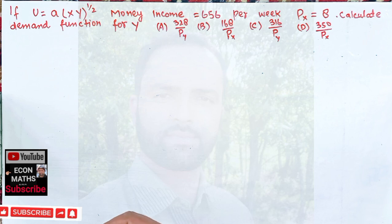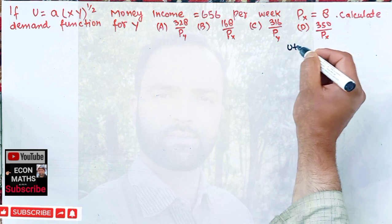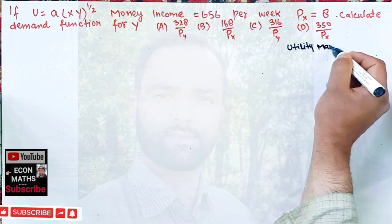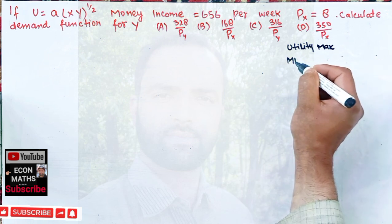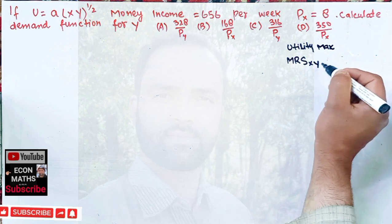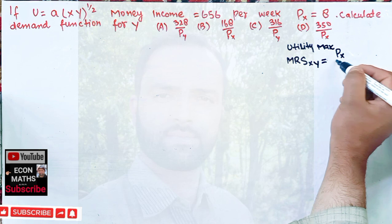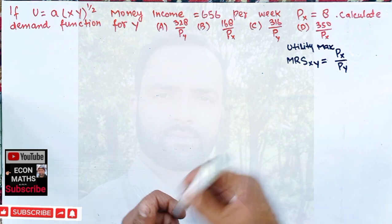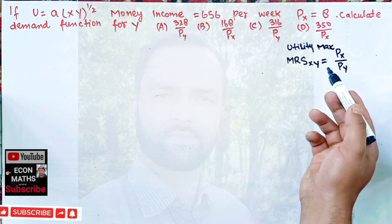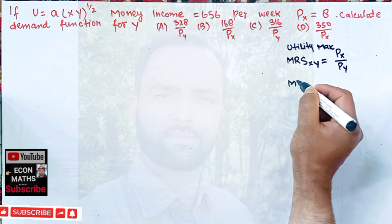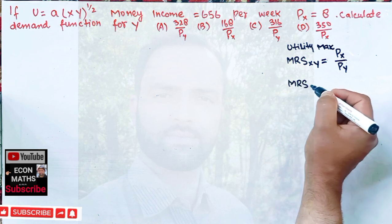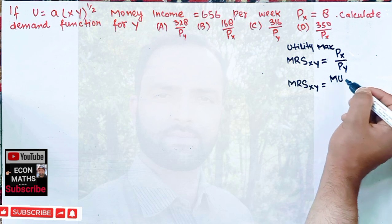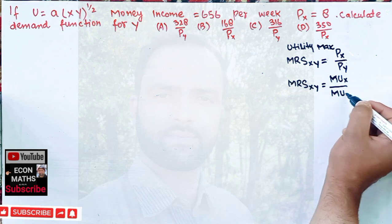To solve this, first we find the utility maximizing condition. The utility maximizing condition is that the marginal rate of substitution between the two goods X and Y should be equal to the ratio of the prices of these two goods. The marginal rate of substitution is equal to the marginal utility of good X divided by the marginal utility of good Y.